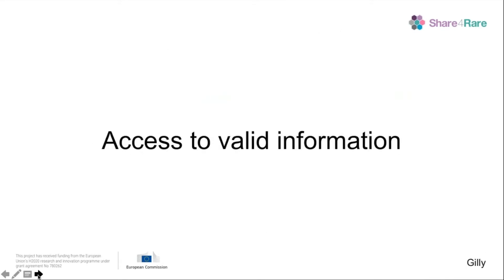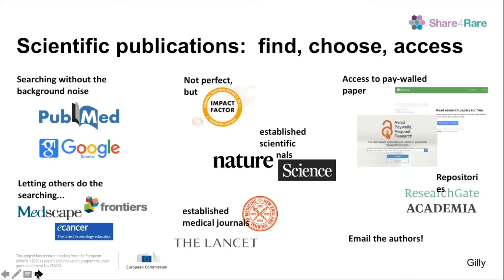The internet is a tool for us to use, and a tool is neither good nor bad — it is what we use it for. Gilly will walk you through accessing valid information. In our area of science and medicine, we can start with tools like PubMed and Google Scholar, which are great because you can search without all the advertising and rubbish that comes through. They also have excellent references. Using things like Medscape and Frontiers systems — Frontiers Oncology and various other disease areas — and for rare cancers, e-cancer, they have already distilled information into a nice usable form.